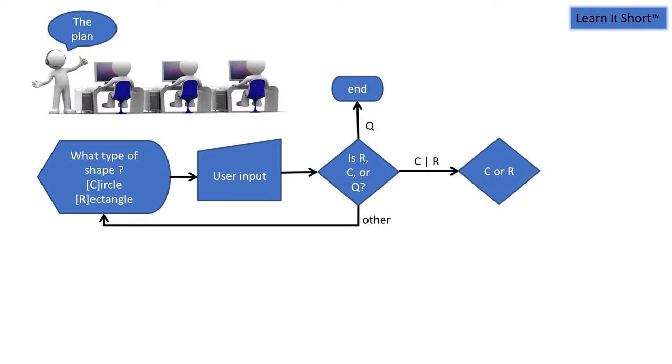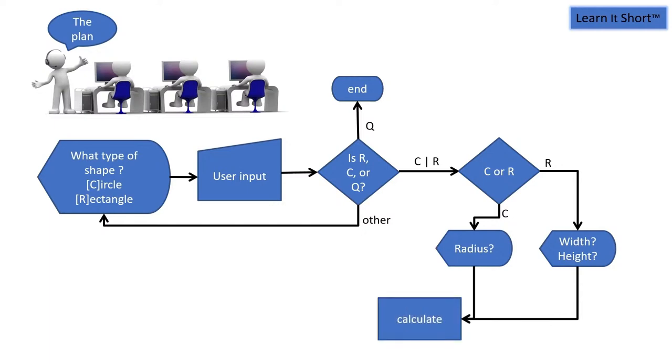If it's a C or an R, we'll make a decision. If it's a rectangle, then we'll prompt them for the height and the width. If it's a circle, we'll prompt them for the radius. Regardless, we still have to calculate the area of the circle or the rectangle and display the results of those calculations. After we make the calculation, we'll display the area and perimeter and then go back and display the menu again.